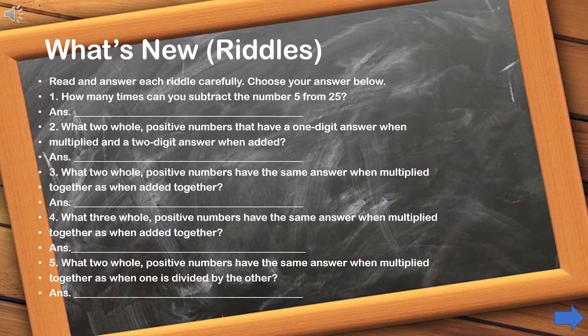What's New — Riddles. Read and answer each riddle carefully. 1. How many times can you subtract the number 5 from 25? 2. What two whole positive numbers have a one-digit answer when multiplied and a two-digit answer when added? 3. What two whole positive numbers have the same answer when multiplied together as when added together? 4. What three whole positive numbers have the same answer when multiplied together as when added together? 5. What two whole positive numbers have the same answer when multiplied together as when one is divided by the other? Write your answer on a separate answer sheet. You can pause this video for a while.